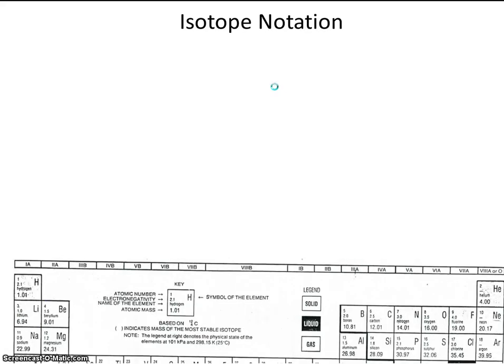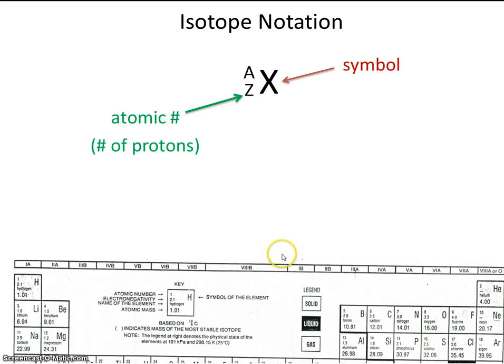So let's look at some isotope notation. X is going to represent our symbol, just like the symbols we'd find here on the periodic table. Z is going to be the atomic number, and remember that's how many protons that element has. And A is the mass number.